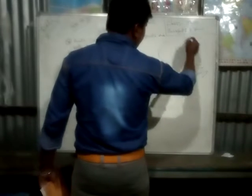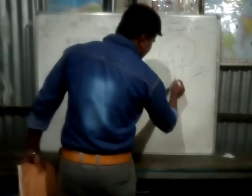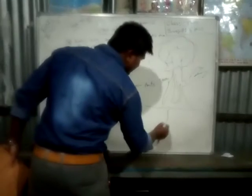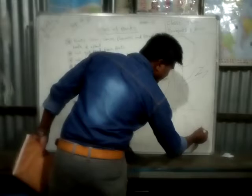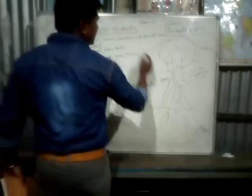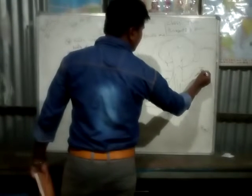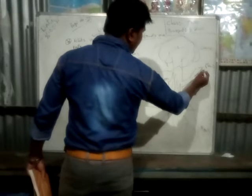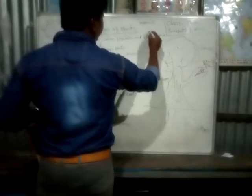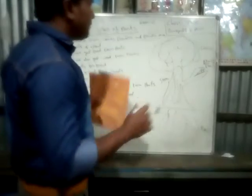This is the plant. This part is called the stem. Below the soil, there are roots — these are known as roots. After that, here are the leaves. Then there will be flowers. From the flower, fruits come — there will be fruits. So fruits are also parts of the plant. The parts are: roots, stem, leaves, flowers, and fruits.